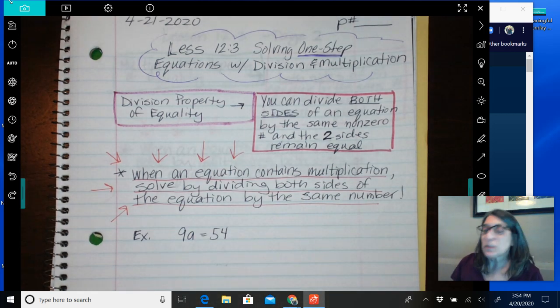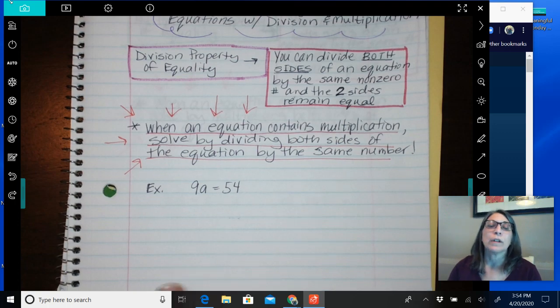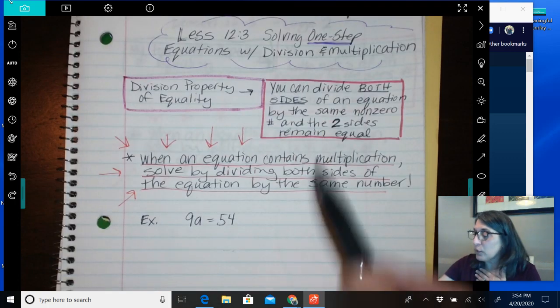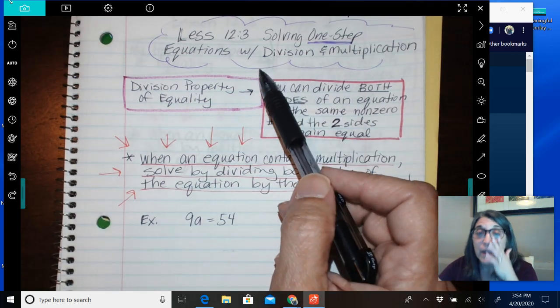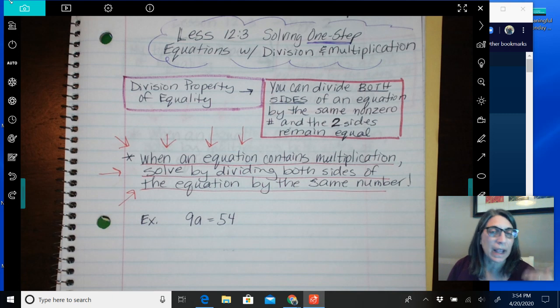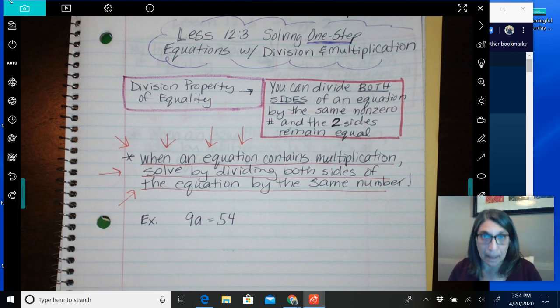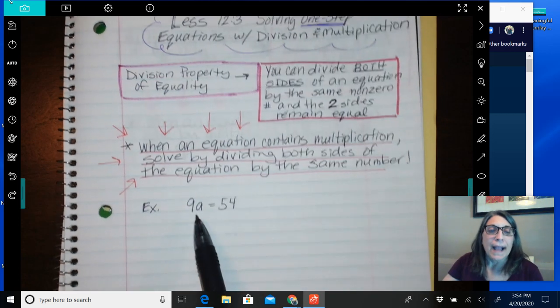All right, so we're going to do 9A equals 54. Remember, just as we talked about last week on our Zoom lesson, this is not about mental math. I know you guys can do mental math. This is about learning, showing me that you can solve a one-step equation, showing yourself and showing all your future teachers' tests, standardized tests that you have to take, algebra classes, college algebra classes, calculus classes, whatever, that you know how to solve these one, two, three, four-step equations because they just get bigger.